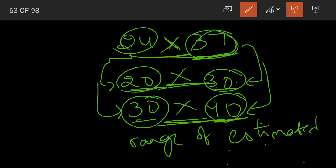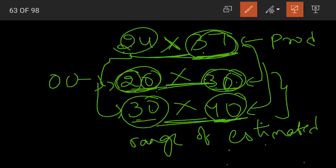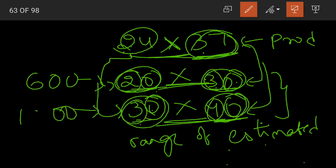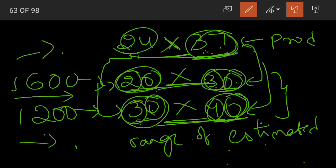Now, the product of 24 into 37 lies between these two. What is 20 into 30? We are having two zeros. Apart from the zeros, two threes are six, so 600. And 30 into 40 has three zeros — three zeros are 12 — so 1200. Our product of 24 and 37 lies between 600 and 1200. The product cannot be less than 600 or more than 1200.